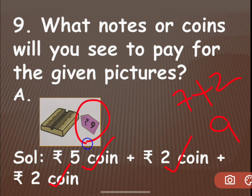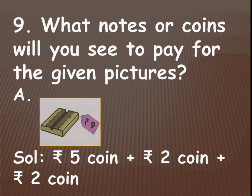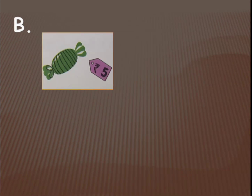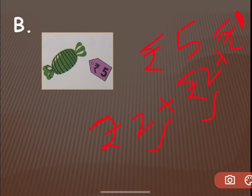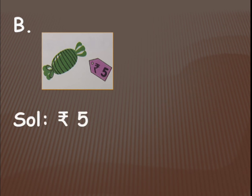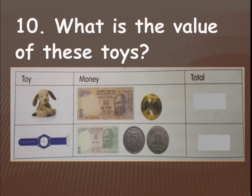Next one is 5 rupees. We don't have a 5-rupee note — we have only coins. So you can give a 5-rupee coin, or else you can give a 2-rupee coin plus a 2-rupee coin plus a 1-rupee coin. That also makes 5: 2 plus 2 is 4, and 4 plus 1 is 5 rupees. It depends on your choice.